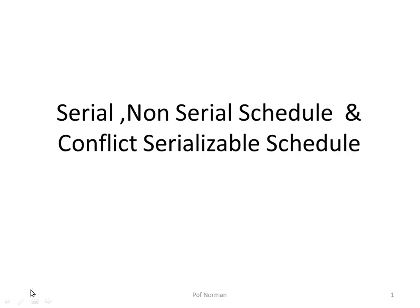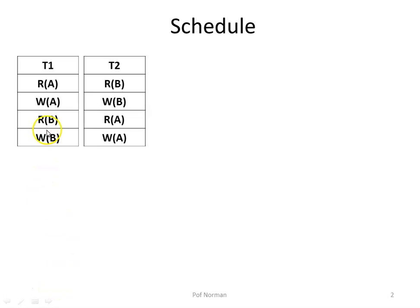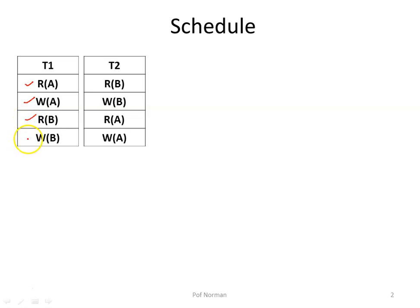Now in this session we will discuss about serial, non-serial and conflict serializable schedules. Here I am having two transactions, transaction T1 and transaction T2. The instructions in transaction T1 are: it reads a database item A, then writes to database item A, reads database item B and then writes to database item B. I have just taken them randomly.